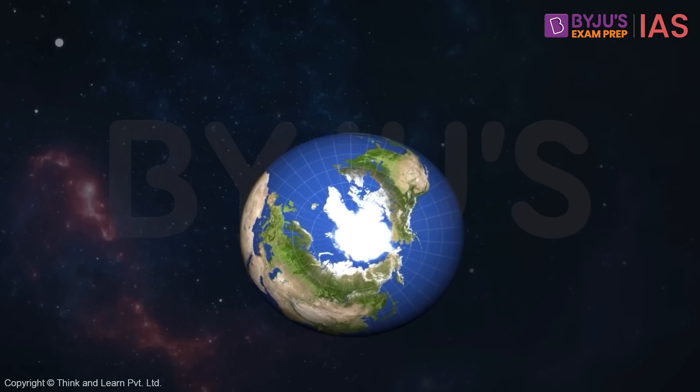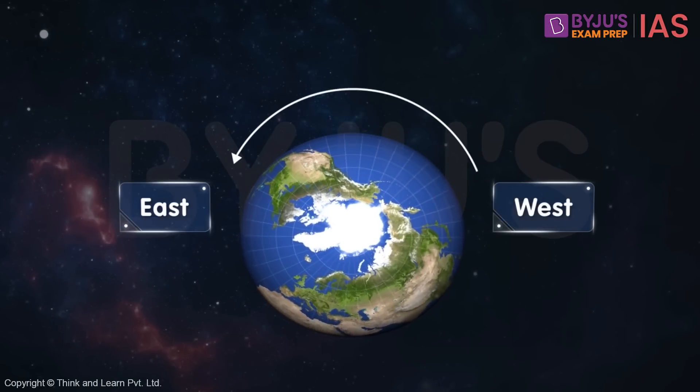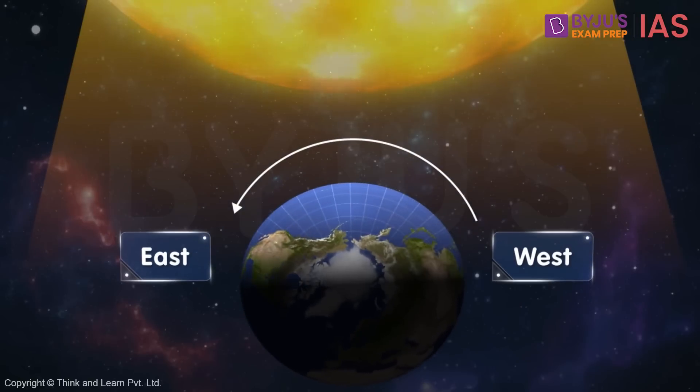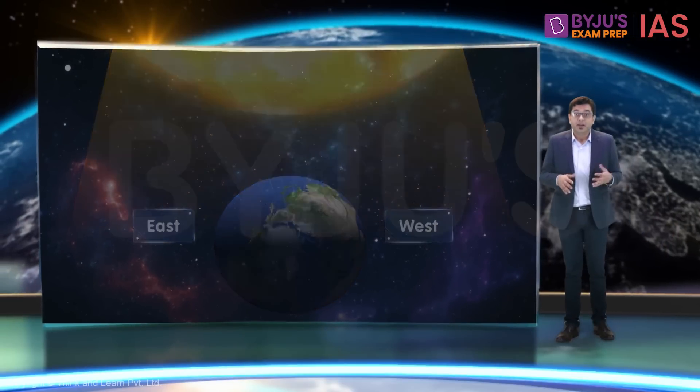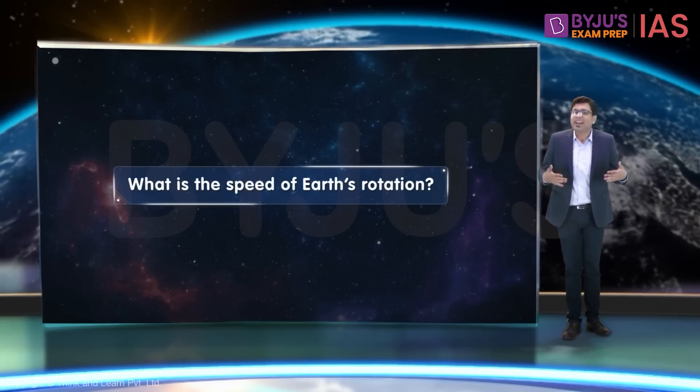We know the earth rotates on its axis from west to east. That's why we observe sunrise in the east and sunset in the west. Now, what is the speed of the earth's rotation? Let's calculate it.